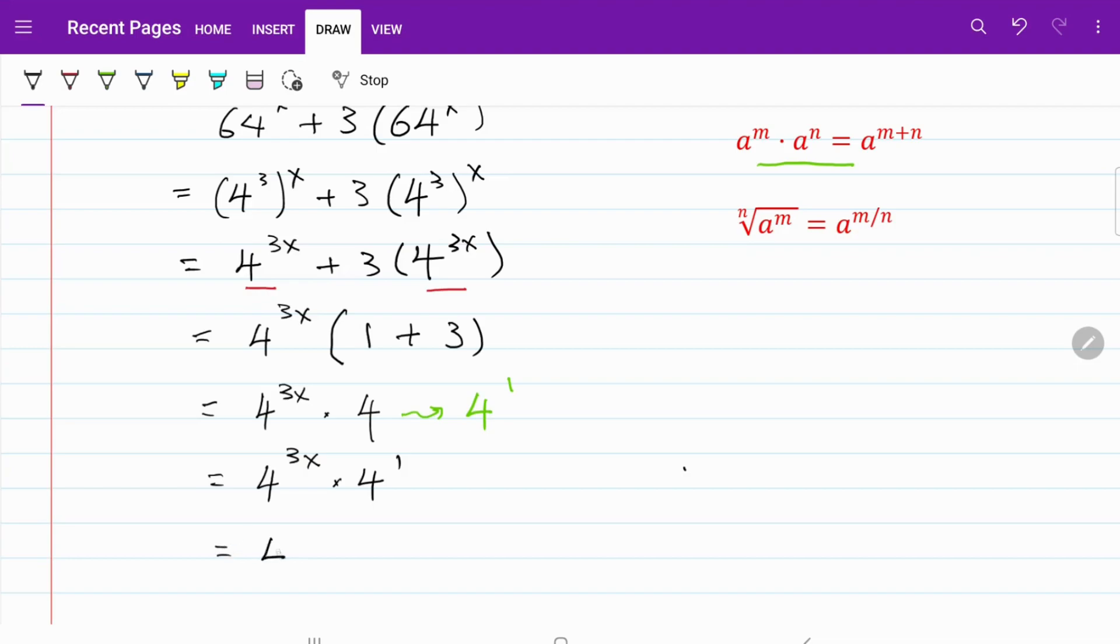Which is also equals to 4 to the power of 3x plus 1. We have now established 4 to the power of 3x plus 1 is equivalent to 64x plus 3 multiplied by 64x.